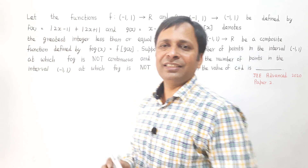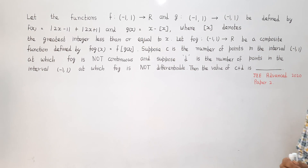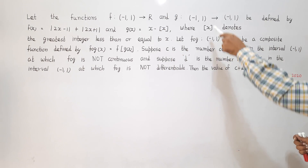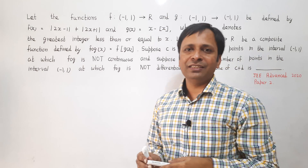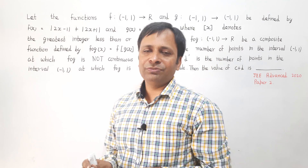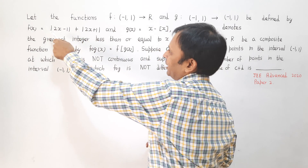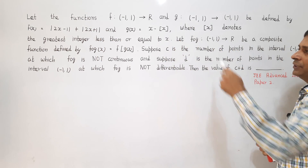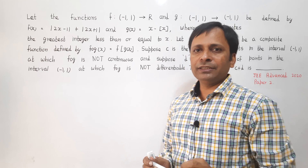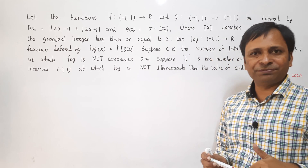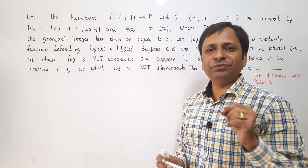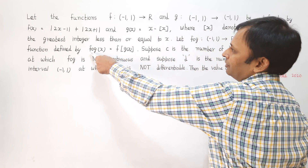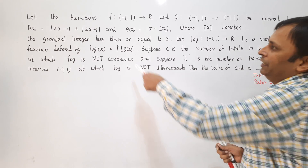Let's have a look at this question which has two functions f and g. The function f has domain from minus 1 to 1 and codomain as the real set, while function g has both domain and codomain in the interval from minus 1 to 1. The function f is defined by |2x − 1| + |2x + 1|, and g(x) = x − ⌊x⌋, which means g(x) is the fractional part function of x.